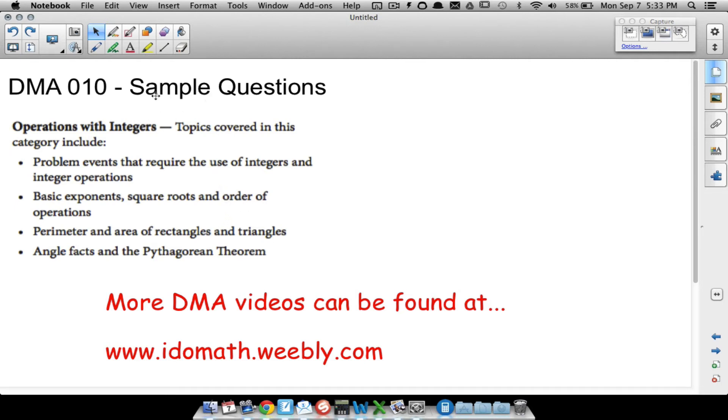In this video we're going to look at a few sample questions that you may see on the DMA 10 portion of the placement test. Here are the topics for DMA 10: operations with integers, word problems with integers, basic exponents, square roots and order of operations, perimeter and area of rectangles and triangles, angle facts and the Pythagorean theorem. I might not cover all these topics in this video, but I definitely cover all of them at my website. I want to show you some sample questions that will look similar to what you may see on the placement test.